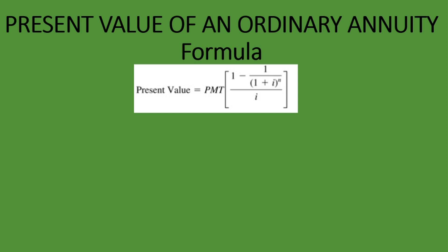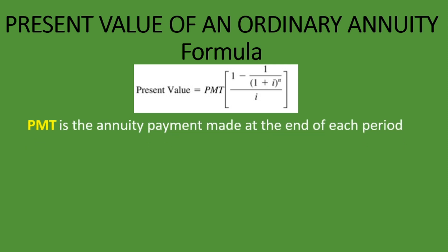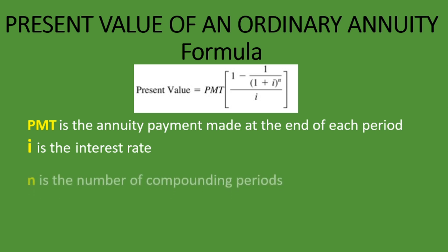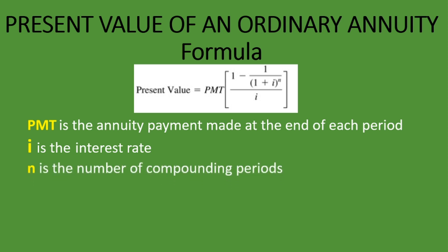What do these letters stand for? PMT is the annual payment made at the end of each period. I is the interest rate — it can be written as I or R, they both mean the interest rate. And N is the number of compounding periods. It's not necessarily the number of years, but the number of compounding periods.